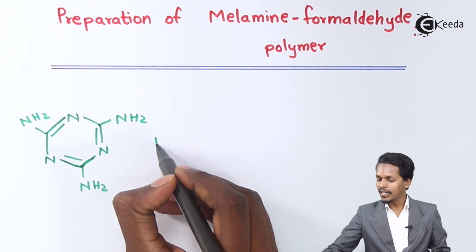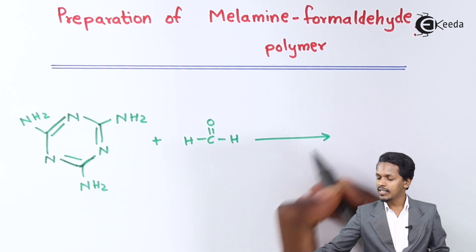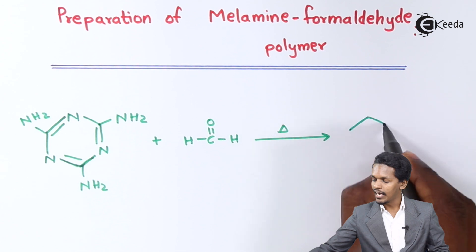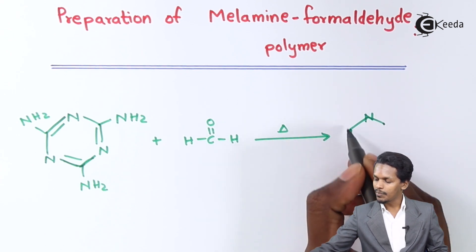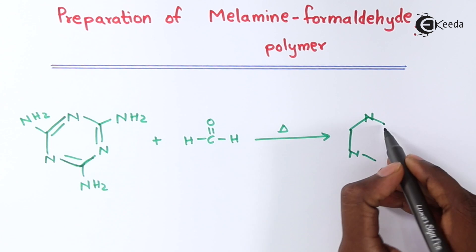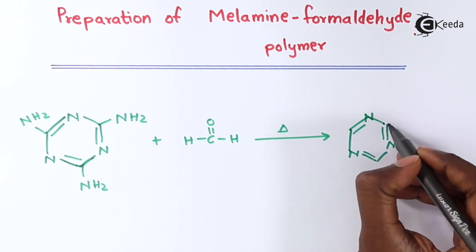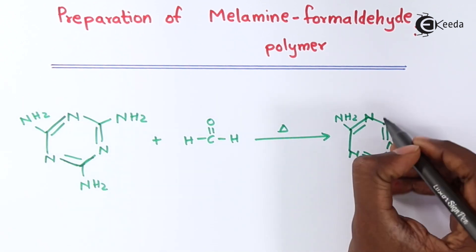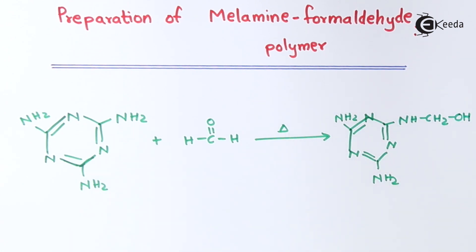We have to react melamine with formaldehyde, that is HC double bond O. Whenever the reaction occurs at a particular temperature and in the presence of a catalyst, the product is an intermediate. This intermediate has a structure where the ring retains alternate single and double bonds, with NH2 groups remaining on two positions, while one NH2 is converted into NH-CH2OH. This is the intermediate we obtain.